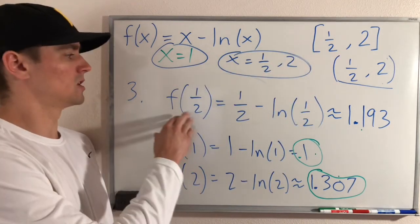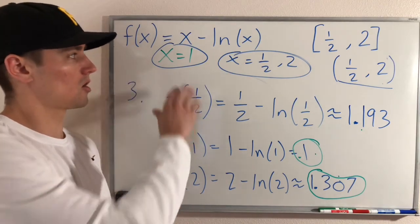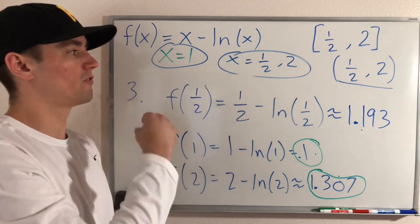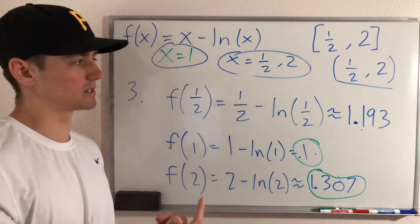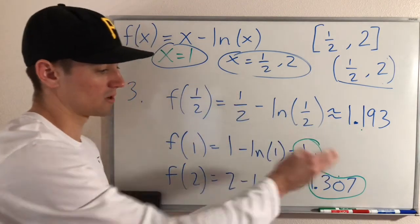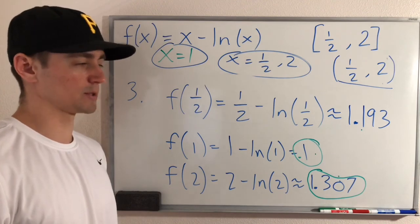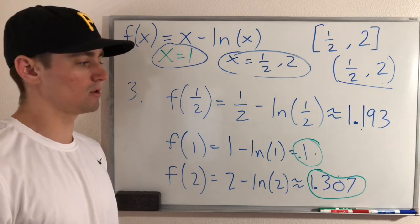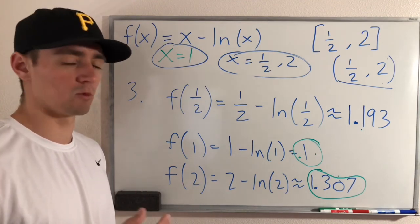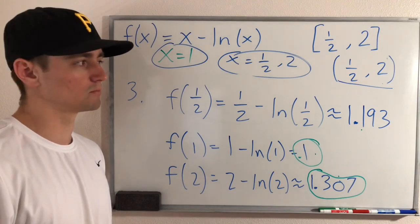So that's really all there is to it. You just take the original function f and plug in the possible values you got from the first and second steps. Whatever your outputs are, those are your possible absolute max and min values — the biggest one is your max, the smallest one is your min. And that's all there is to it.